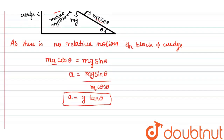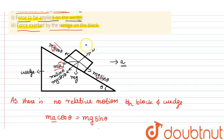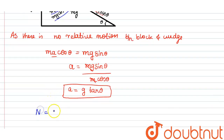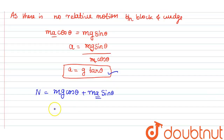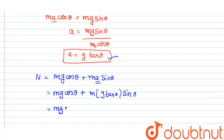Now we need to calculate the force exerted by the wedge on the block. Equating the vertical component, N must equal mg cosθ + ma sinθ. So N = mg cosθ + ma sinθ. Substituting the acceleration value a = g tanθ: N = mg cosθ + mg tanθ · sinθ, which can be written as mg cosθ + mg · (sinθ/cosθ) · sinθ.